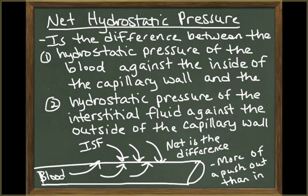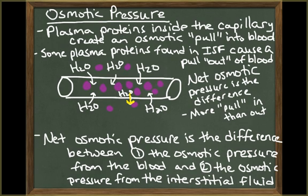It's important to understand how the net filtration and net reabsorption are calculated. The net hydrostatic pressure is the difference between the hydrostatic pressure inside the capillary wall and the hydrostatic pressure outside the capillary. The blood pressure pushes the blood against the walls of the capillaries, but this is somewhat opposed by the pressure of the interstitial fluid against the wall of the capillaries. The net hydrostatic pressure is the difference between those two forces. The plasma proteins in the capillaries create the colloid osmotic pressure that pulls water into the blood vessel, but there is also interstitial fluid colloid pressure from a small amount of plasma proteins in the interstitial fluid. The net colloid pressure is the difference between the pull from the interstitial proteins and the pull from the blood plasma proteins.